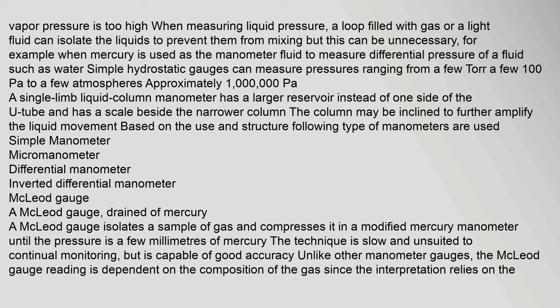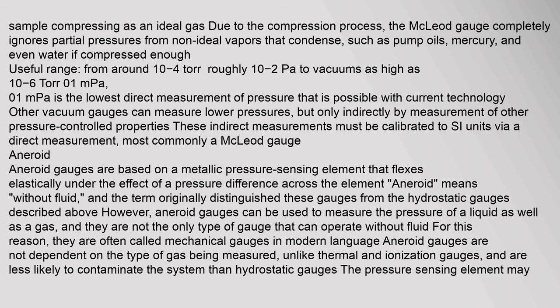Based on use and structure, the following types of manometers are used: simple manometer, micromanometer, differential manometer, and inverted differential manometer. A McLeod gauge isolates a sample of gas and compresses it in a modified mercury manometer until the pressure is a few millimeters of mercury. The technique is slow and unsuited to continual monitoring but is capable of good accuracy. Unlike other manometer gauges, the McLeod gauge reading is dependent on the composition of the gas since the interpretation relies on the sample compressing as an ideal gas. The McLeod gauge completely ignores partial pressures from non-ideal vapors that condense, such as pump oils, mercury, and water. Useful range: from around 10⁻⁴ torr (roughly 10⁻² pascals) to vacuums as high as 10⁻⁶.